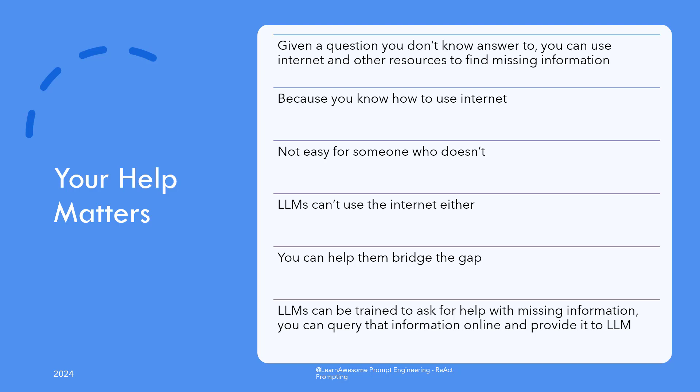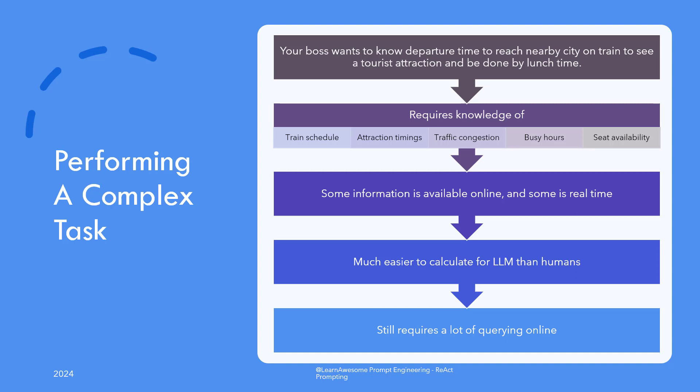Being able to walk up to a computer, open a browser and start Googling is much easier for you than for a machine learning model, but that can change with your help. You can train the model to ask for your help whenever it needs some information. You query the information online, pump the answer back to the model, and Bob's your uncle. If the query was complex — like figuring out what time to leave home to complete sightseeing by afternoon — it would require searching traffic routes, train schedules, timing for tourist attractions, queue lengths, and busy hours. The large language model should be able to come up with what to query on its own.